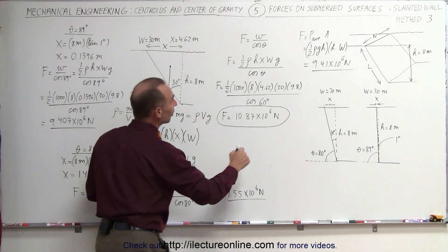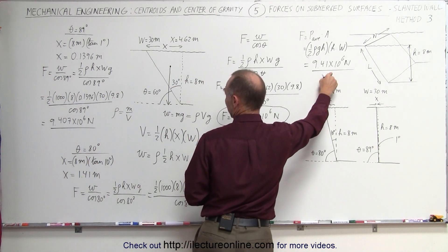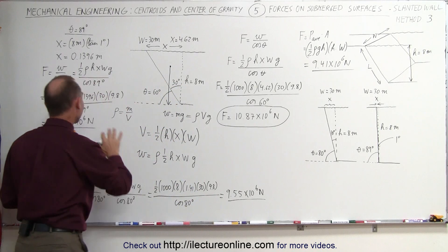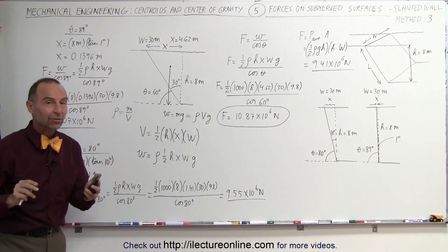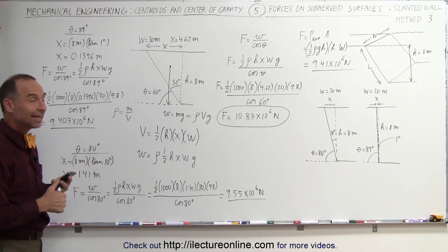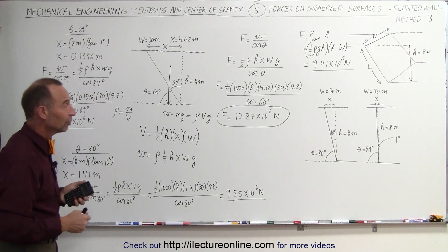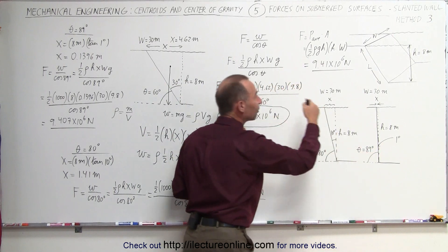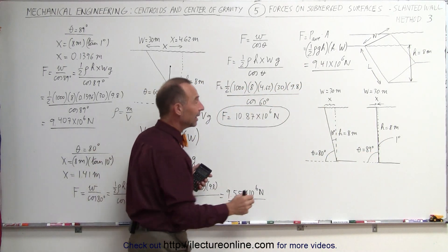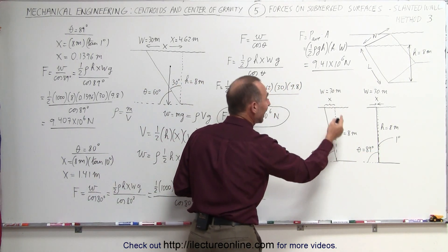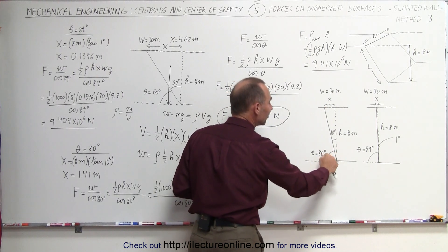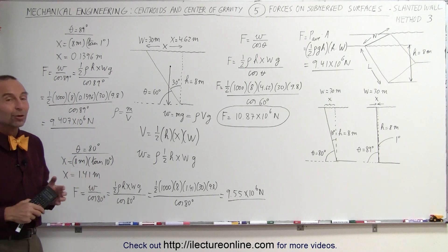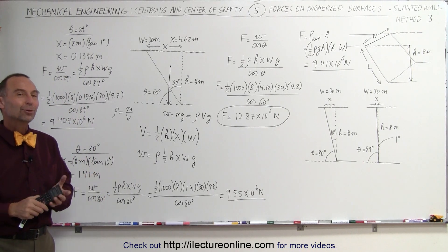Notice how close that is — 9.407 versus 9.41 × 10⁶. A slight rounding error, but we got really close, confirming the equation works. No matter what the angle is, if we have a straight slant, we can find the force by calculating the weight of the wedge of water and dividing by the cosine of the angle. It's really interesting how that gives the correct value for any angle.